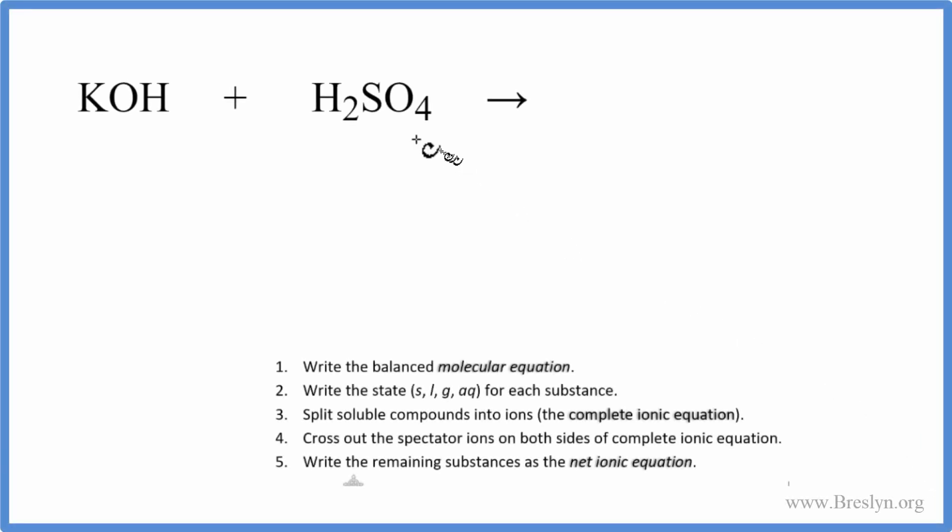In this video, we'll write the net ionic equation for KOH plus H2SO4. That's potassium hydroxide plus sulfuric acid.